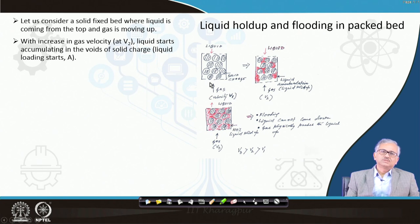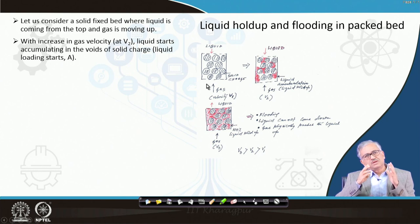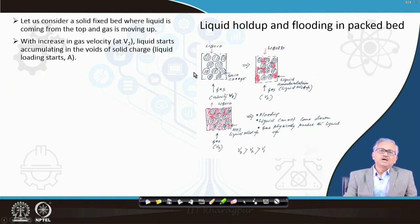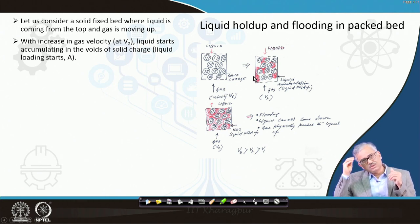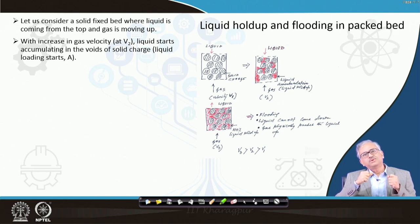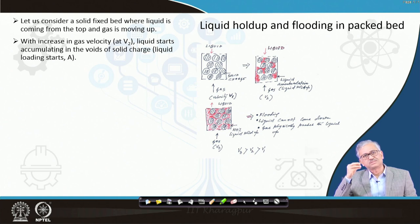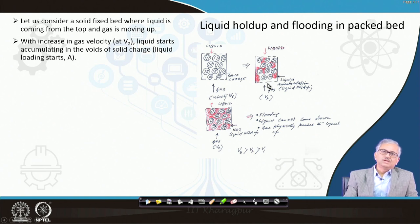If you go on increasing the gas velocity, there is gas-liquid frictional force. Gas is moving up and liquid is coming down. After some time, friction may be high enough that it does not allow all the liquid to come through. Whatever liquid is coming in, the same amount may not come out from the bottom, because a part of the liquid may start accumulating into the bed — shown by the red line. This condition is called the holdup: liquid is getting held up inside the system. It becomes a somewhat transient process.